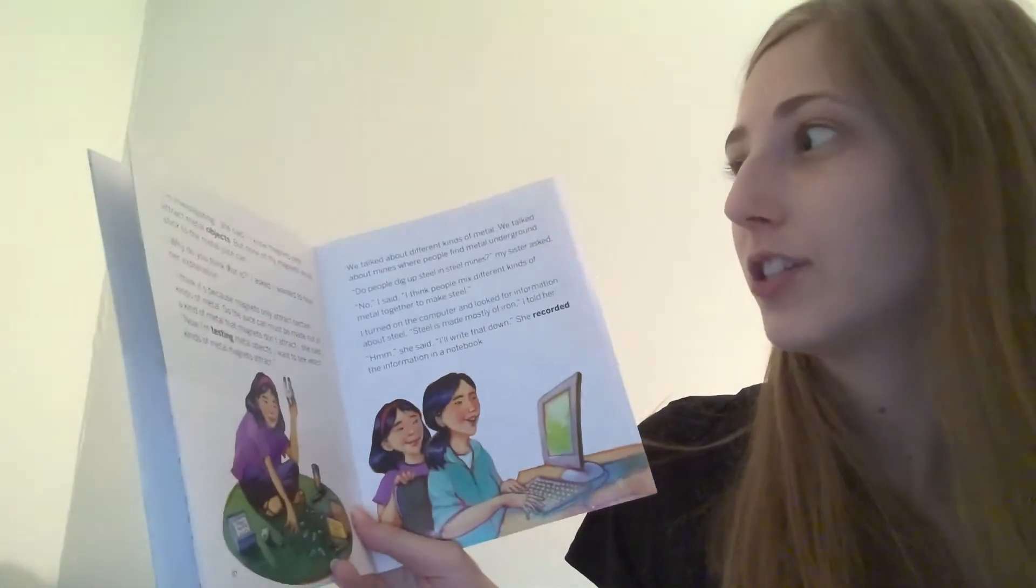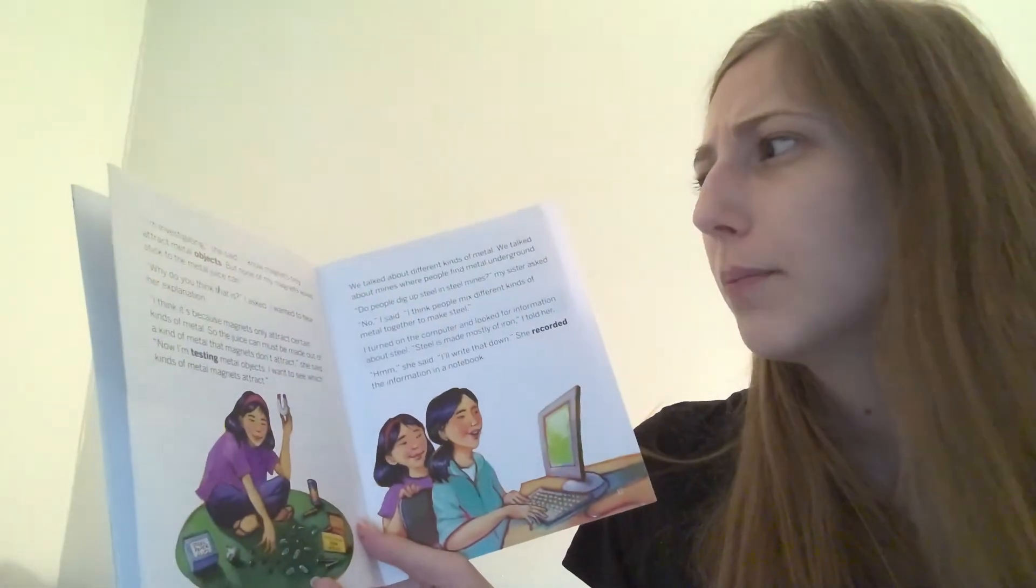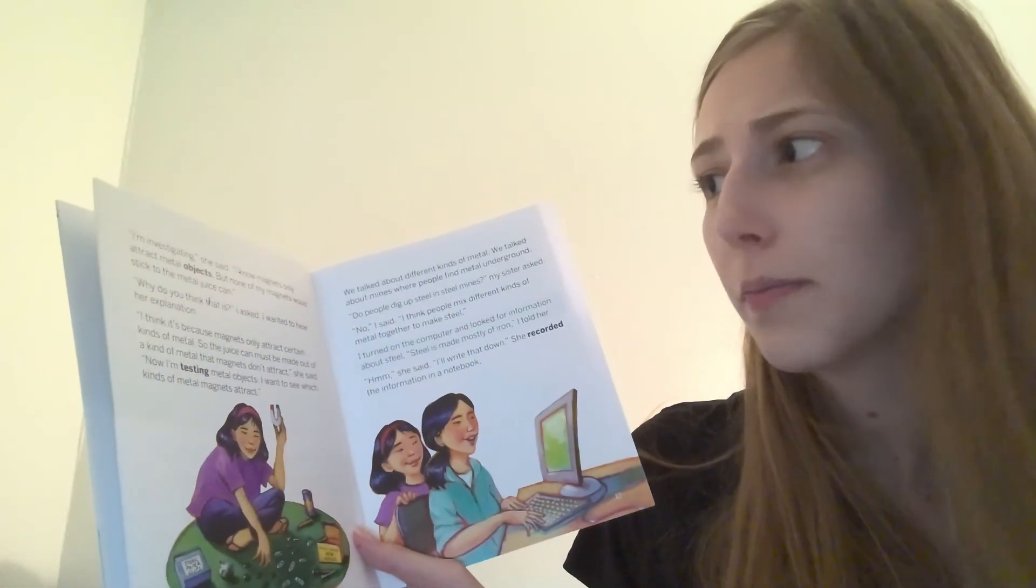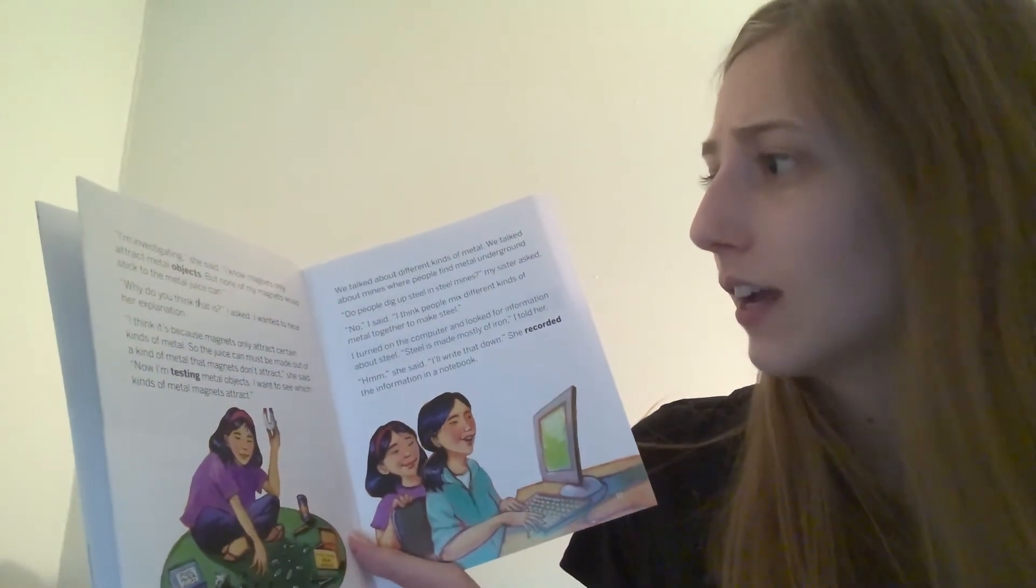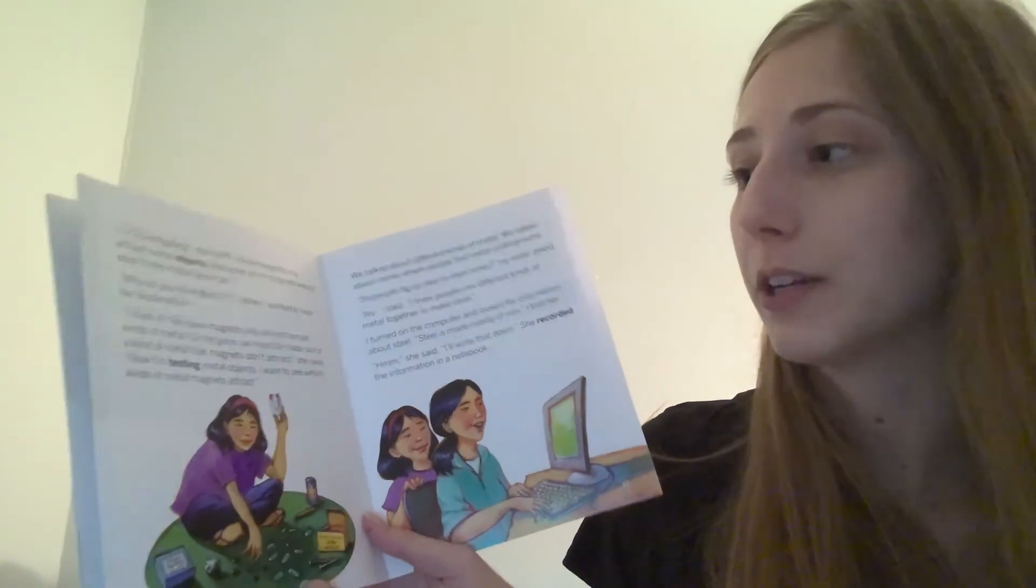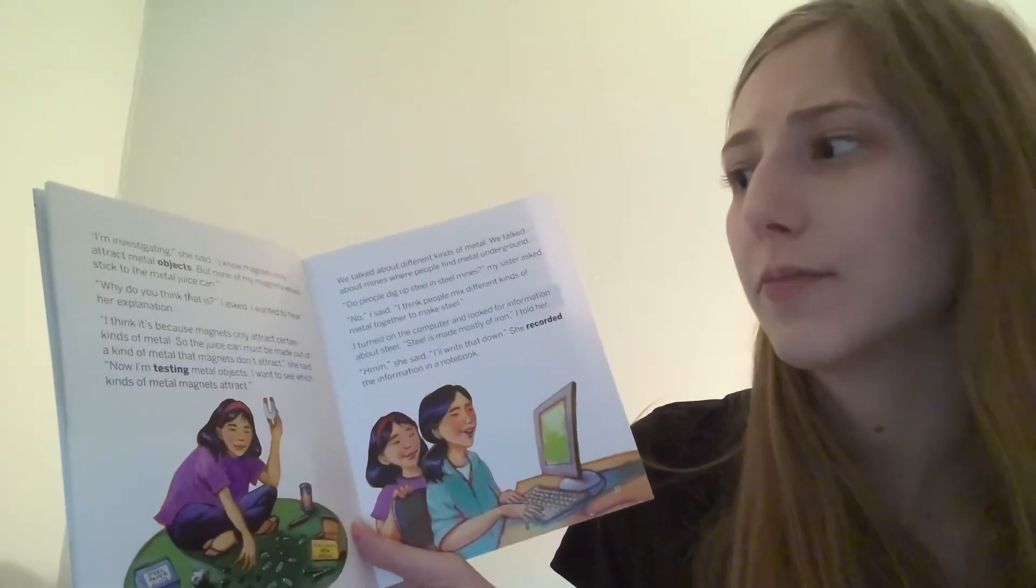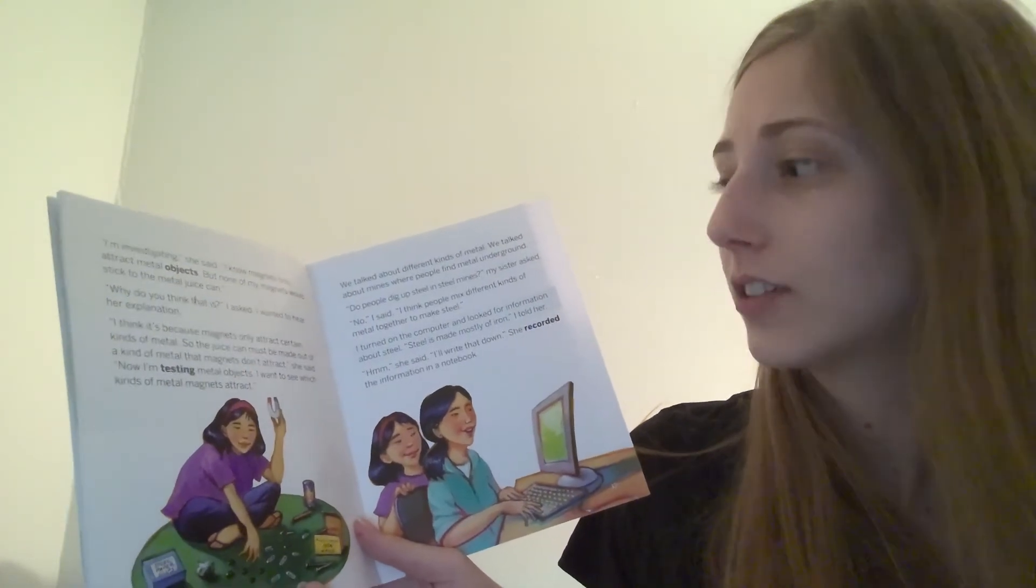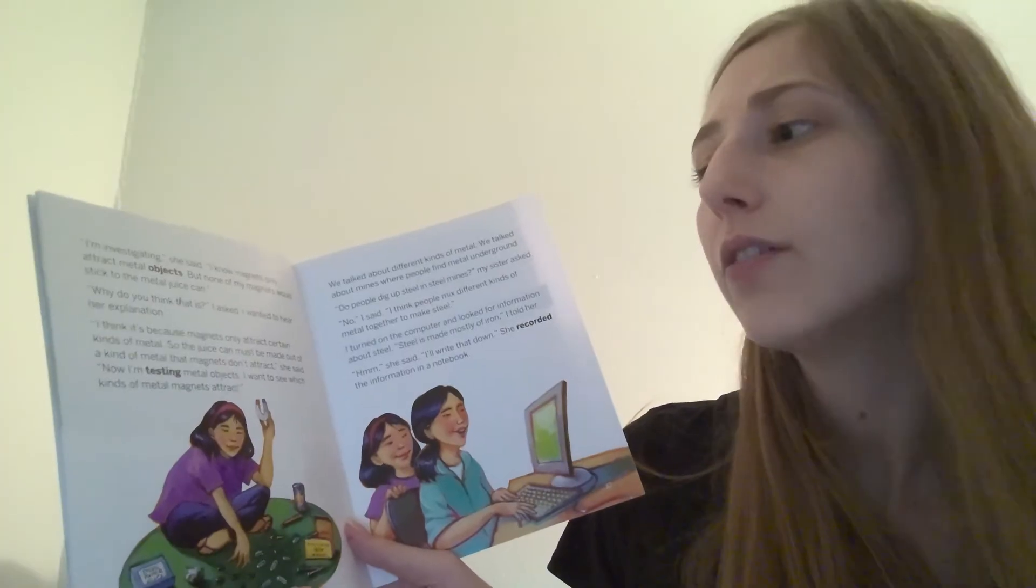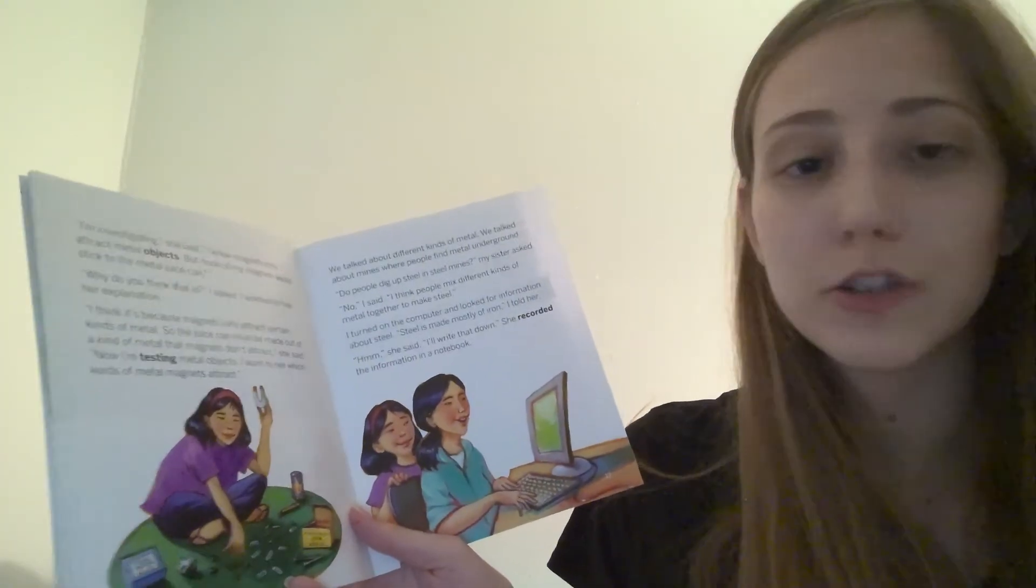I'm investigating, she said. I know magnets only attract metal objects, but none of my magnets would stick to the metal juice can. Why do you think that is? I asked. I wanted to hear her explanation. I think it's because magnets only attract certain kinds of metal. So, the juice can must be made out of a kind of metal that magnets don't attract, she said. Now, I'm testing metal objects. I want to see which kinds of metals magnets attract.